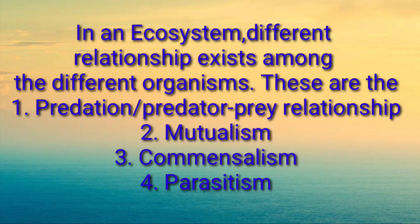In an ecosystem, different relationships exist among the different organisms. These are: number one, predation or the predator-prey relationship; number two, mutualism; number three, commensalism; and number four, parasitism.